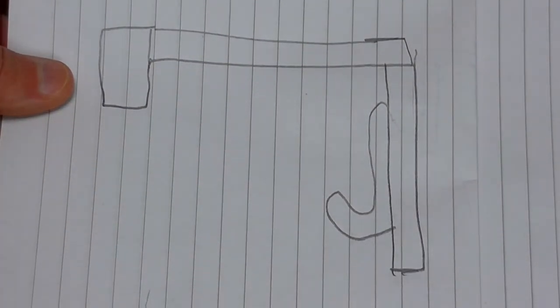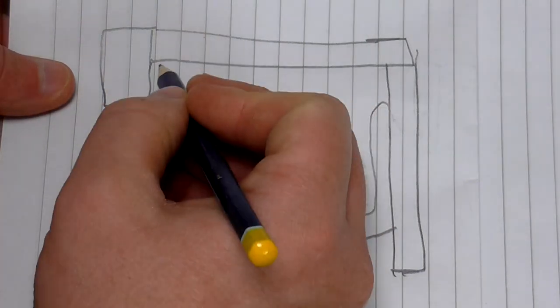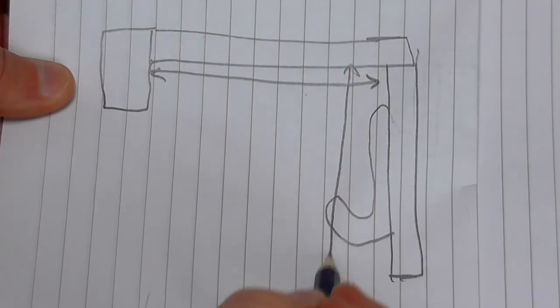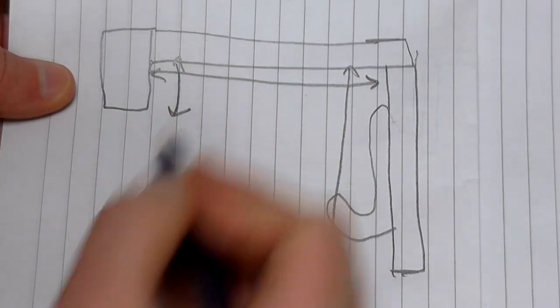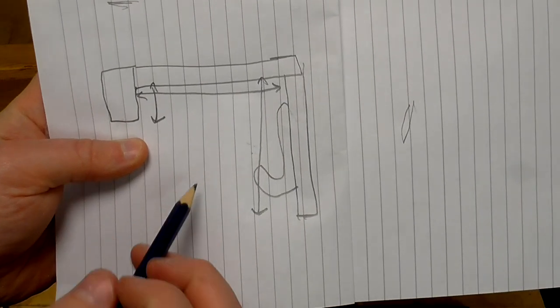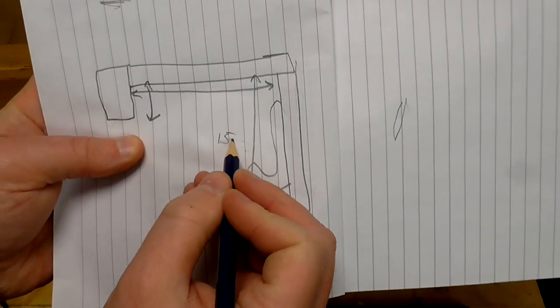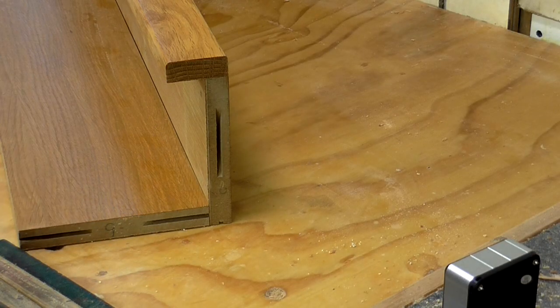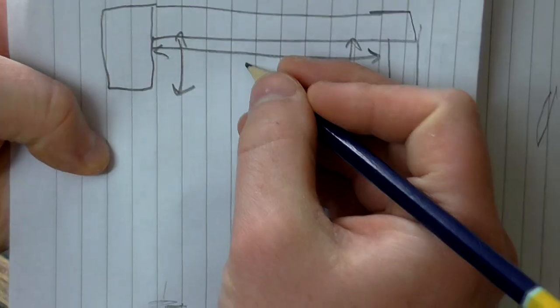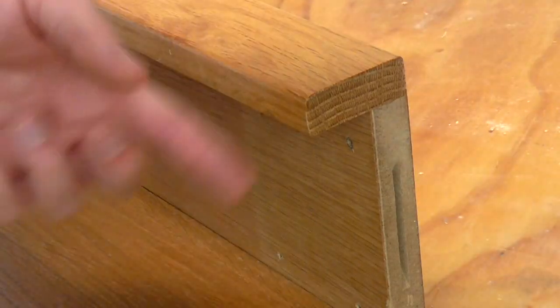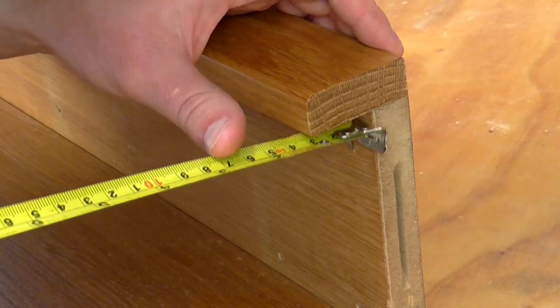So to cut a corner support for this, I need to know three dimensions: this one, this one, and this one. I already know this one because that's the dimension I just ripped the shelf to, which is 15.5 centimeters. Next I need the distance between here and the piece of trim, and that's 11.6. And finally I need the distance between the underside of the top shelf and the edge of the trim, which is exactly 3 centimeters.